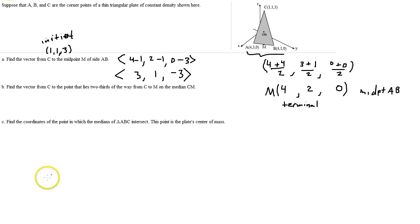Okay, now, continuing on, in part B they say find the vector from C to the point that lies 2 thirds of the way from C to M. On that median, CM, there's a median that connects C to M. And we want to find the point that is 2 thirds along the way. They marked it off.